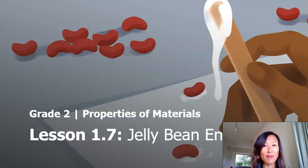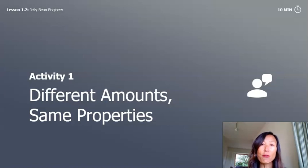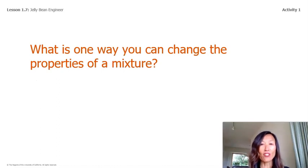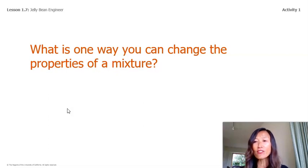Hi everyone, I'm Mrs. King Crosby and this is Properties of Materials, Lesson 7, Jelly Bean Engineer. Activity 1 is 'Different Amounts, Same Properties.' We've been investigating this question: how can properties of a mixture change? What is one way you can change the properties of a mixture? I'm sure you said you can add a new ingredient.